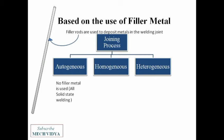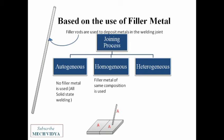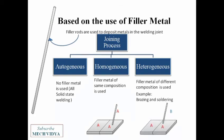A welding process is said to be homogeneous if we use filler metal of the same composition as that of the parent metal. Finally, heterogeneous welding is that type of welding where the filler metal is something different from the base metals. An example is brazing and soldering, where the base metal and the filler rod are of different composition.